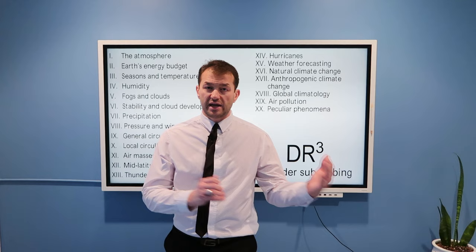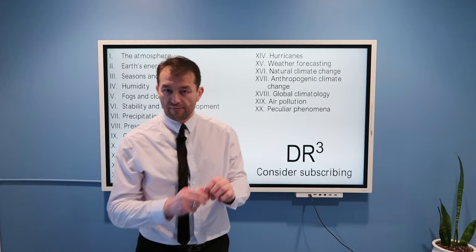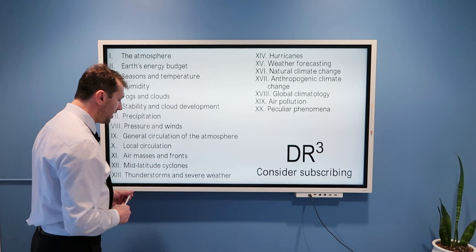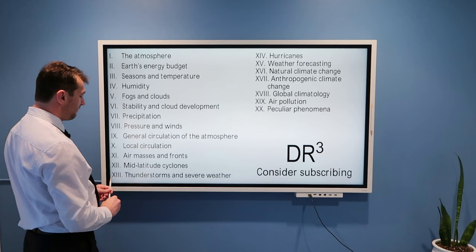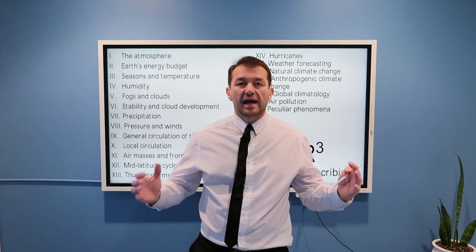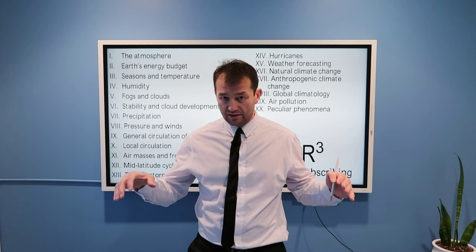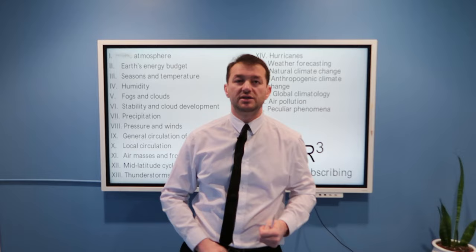And then we will talk about local circulation. That is lake breeze, sea breeze, land breeze, coastal winds, mountain winds, all these urban type circulation, all these local circulations that can affect weather at your microlocation. Air masses and fronts, mid-latitude cyclones, mid-latitude cyclones are the big daddy of weather in mid-latitudes. In mid-latitudes, most of the weather is associated with formation, passage and dissipation of these mid-latitude cyclones.